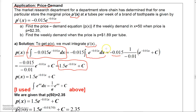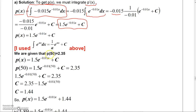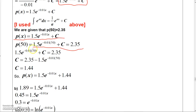Normally we can't determine the constant unless we have additional information — and we do. We know that when X = 50, the price is $2.35. So I plug in 50 for X and set the price function equal to 2.35. Using a calculator, I compute 1.5 e to the negative 0.01 times 50.